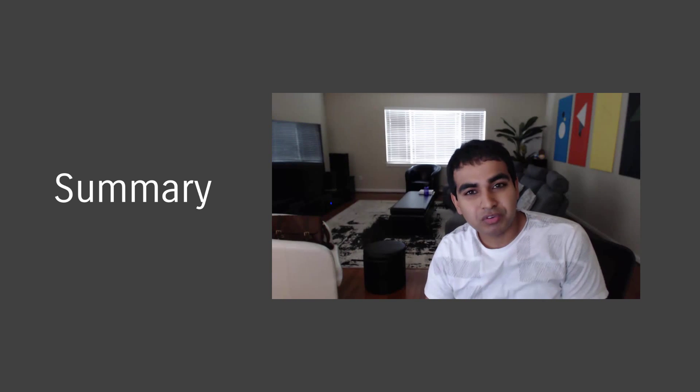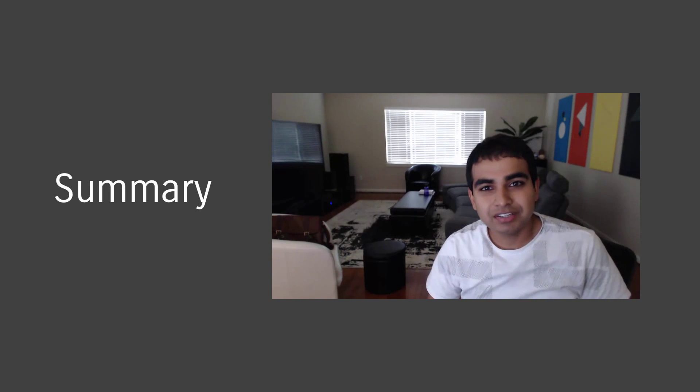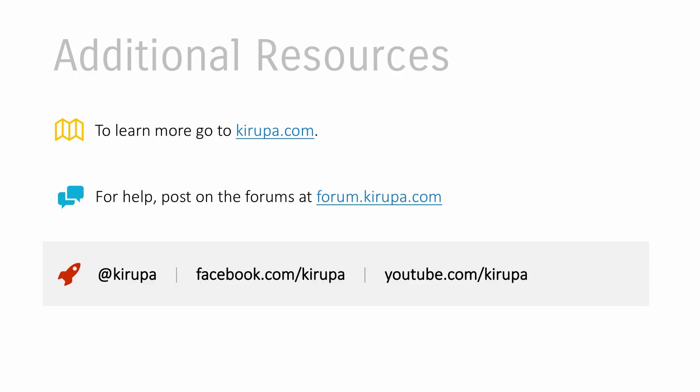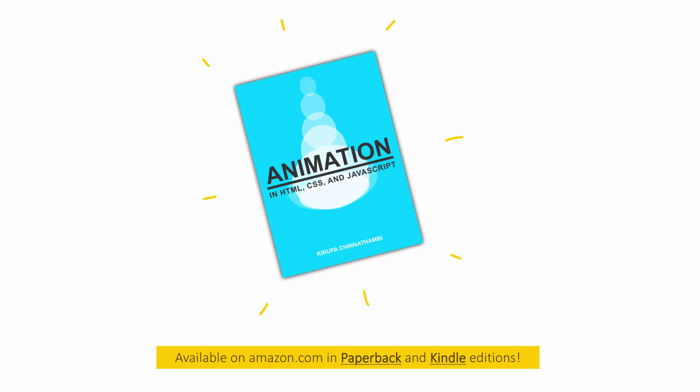So there you have it — a very quick overview of what animations are, how they relate to what you'll create on the web, and what you'll be seeing in the many videos directly after this. If you'd like to learn more, you can go to coop.com and look at all the animation courses available. Post any questions on forum.krupa.com, and you can also reach me on Twitter, Facebook, or YouTube. And if you prefer reading, I have a book called Animation: HTML, CSS, and JavaScript, available on Amazon in paperback and Kindle editions. I'll see you in the next video.